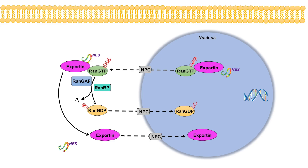Then, as we've learned before, RAN-GDP and exportin proteins can re-enter the nucleus through nuclear pore complexes and the cycle can continue. RAN-GDP can be recycled back into RAN-GTP in the nucleus via RCC1, and the exportin protein can be used again to bind to protein cargo in the nucleus that has nuclear export signals.